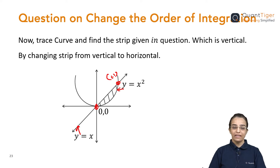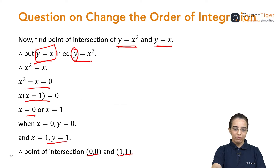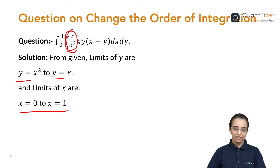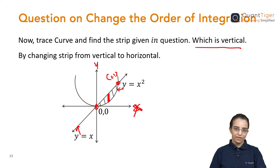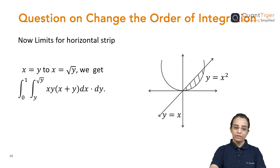Now, identify the given strip in the question. The given limits were in the form of x, so these are y's limits — meaning the strip is vertical. We have to convert it: we are changing it into a horizontal strip. All the other points — the point of intersection, the parabola equation, the straight line equation, the x-axis, y-axis — everything else remains the same. The only change on this slide is that we have to change the vertical strip to horizontal.